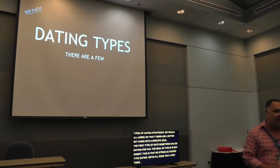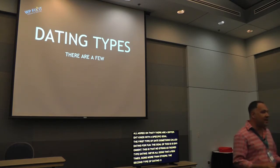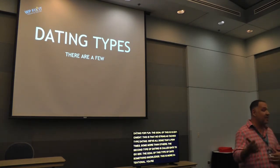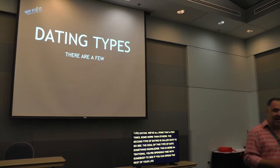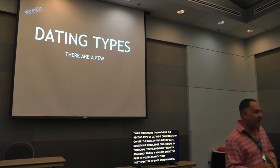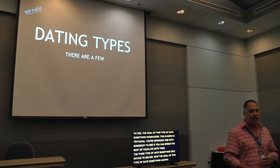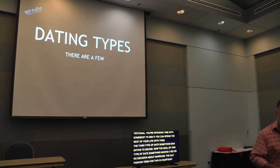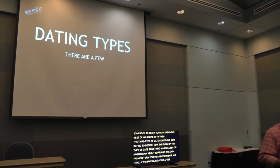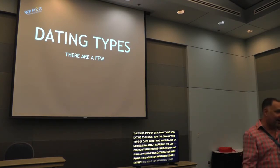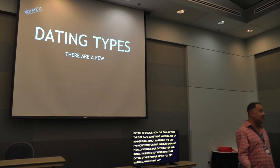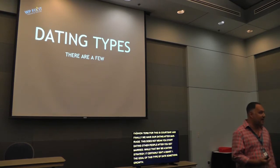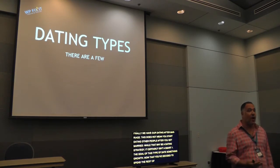The third type of dating is dating to decide, and the goal is making a yes-or-no decision about marriage. The old-fashioned term for this is courtship. And finally, we have dating after marriage — and this does not mean you start dating other people after you get married. While that may be a dating strategy, it certainly isn't a smart one. The goal of this type is growth: now that you've decided to spend the rest of your life with somebody, you need to grow and nurture that relationship.